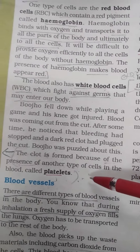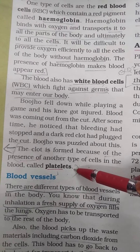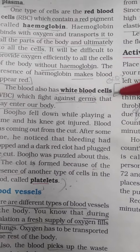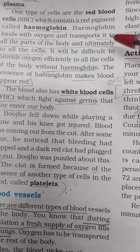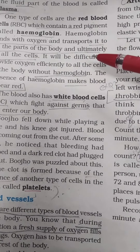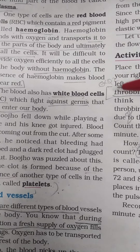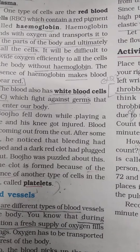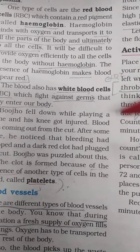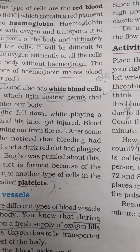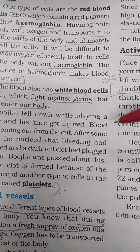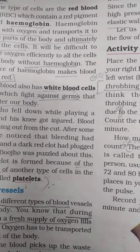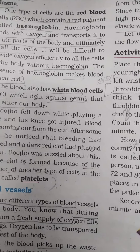The clot is formed because of the presence of platelets in the blood. The functions of blood are: blood carries digested and absorbed food nutrition from the small intestine to all other parts of the body; blood transports oxygen from the lungs to the cells of the body; and blood also transports wastes for removal from the body.